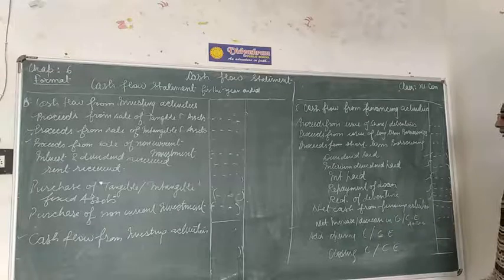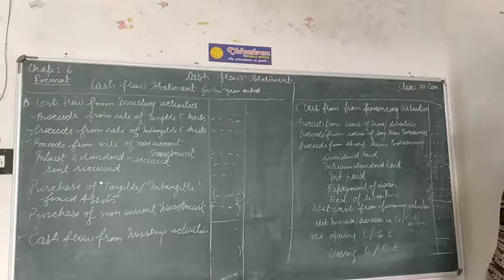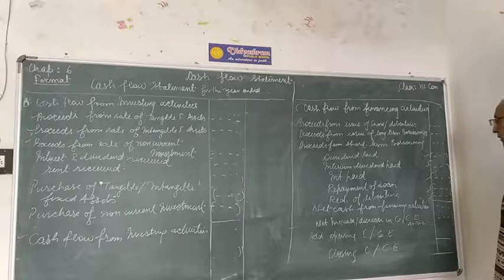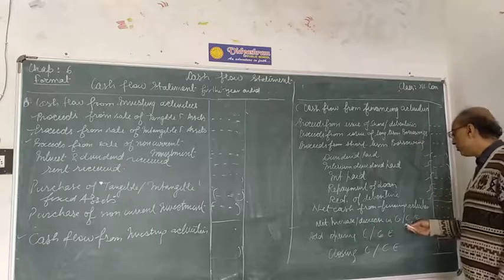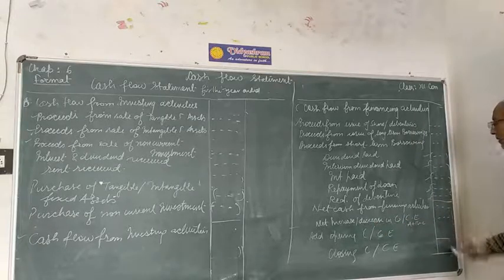This completes cash flow from financing activities. So we have three points: A, B, and C. Operating activities, investing activities, and financing activities. We add A plus B plus C.